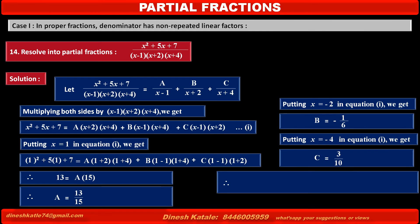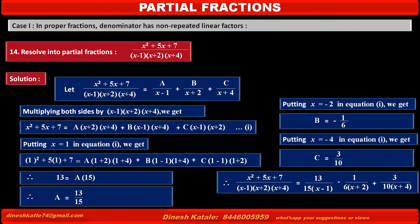Therefore, the given fraction x squared plus 6x plus 7 upon (x minus 1)(x plus 2)(x plus 4) equals 13 upon 15(x minus 1) minus 1 upon 6(x plus 2) plus 3 upon 10(x plus 4). Thank you.